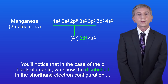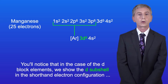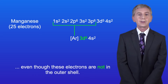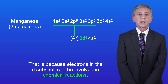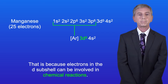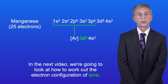You'll notice that in the case of d-block elements we show the d-subshell in the shorthand electron configuration, even though these electrons are not in the outer shell — that's because electrons in the d-subshell can be involved in chemical reactions. In the next video we're going to look at how to work out the electron configuration of ions.